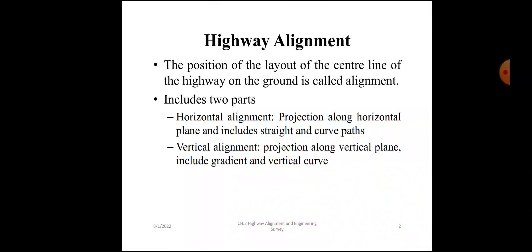Highway Alignment: the position of the layout of the center line of the highway on the ground is called alignment. It includes two parts: horizontal alignment and vertical alignment. Horizontal alignment is the projection along the horizontal plane and includes straight and curve parts. Vertical alignment is the projection along the vertical plane and includes gradient and vertical curve.